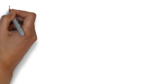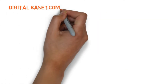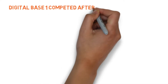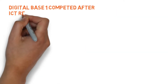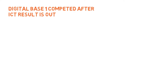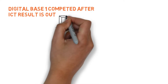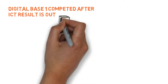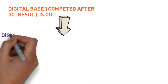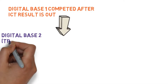After getting the result of the ICT test, you have completed your Digital Nurture Base 1 program. Now, if your result is good, they will offer you to join Digital Base 2. So once you are done with Digital Base 1, it's time to go for Digital Base 2.